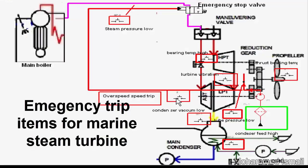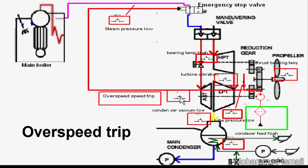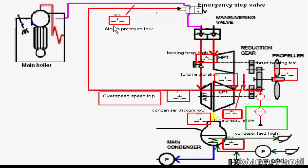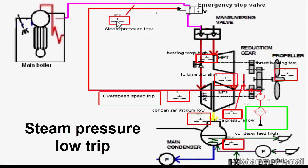Emergency trip items for a marine steam turbine include: over speed trip and steam pressure low trip.